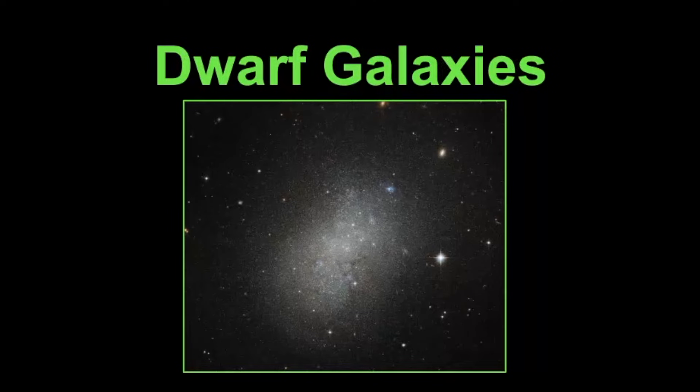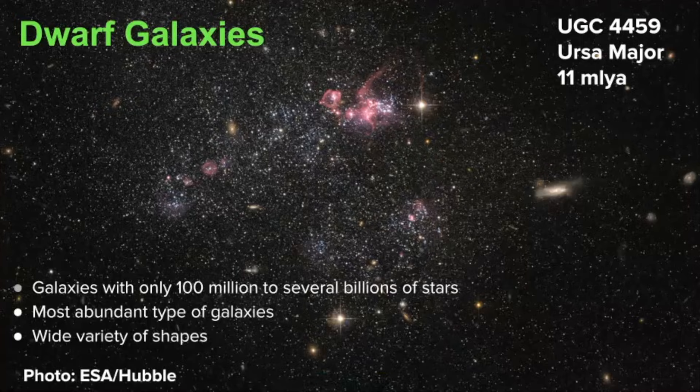A dwarf galaxy is a small galaxy composed between 1 million stars or up to a billion stars. So that's very small in comparison to our own Milky Way.